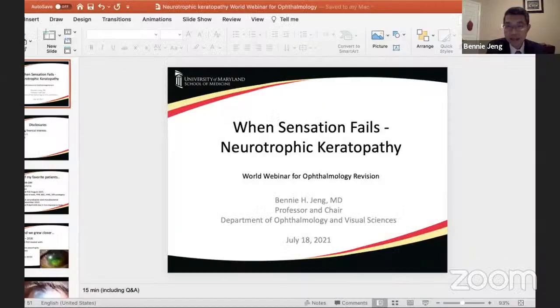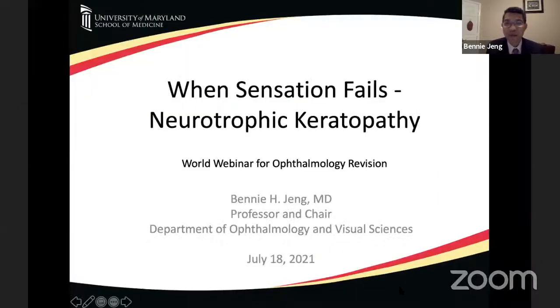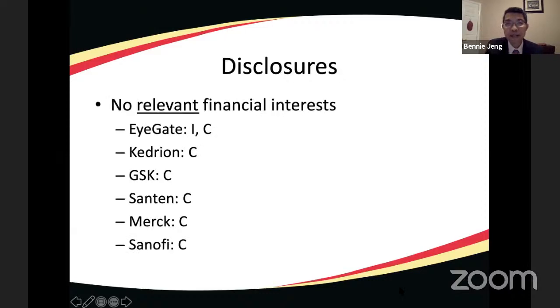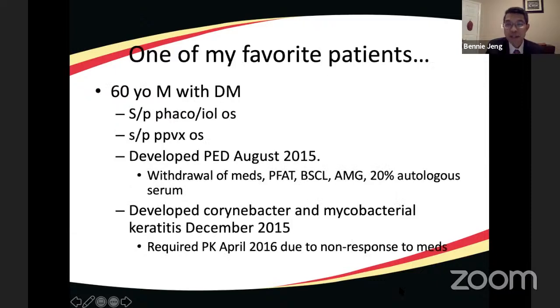Dr. Young thanks the moderators and Professor Sharma for the invitation. He begins with a case: a 60-year-old gentleman with diabetes who underwent complicated cataract surgery requiring pars plana vitrectomy and lensectomy in his left eye, developing a non-healing persistent epithelial defect in August 2015.